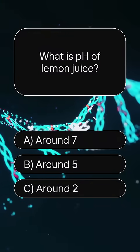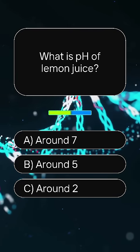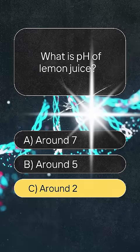What is pH of lemon juice? Answer C. Around 2.